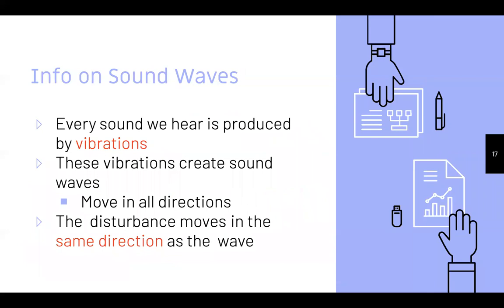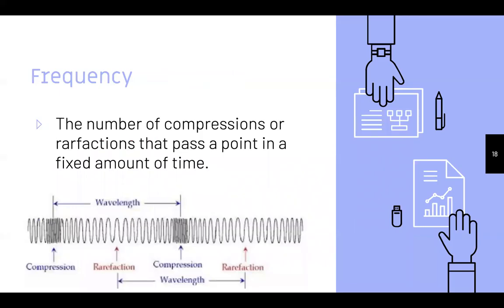Every sound we hear is produced by vibrations. These vibrations create sound waves that move in all directions — it's not just one narrow path; they spread outward and outward. The disturbance moves in the same direction as the wave. Frequency is the number of compressions or rarefactions that pass a point in a fixed amount of time. We can see the wavelength from compression to compression or rarefaction to rarefaction — compression means the particles are getting closer together, while rarefaction is them stretching further apart.